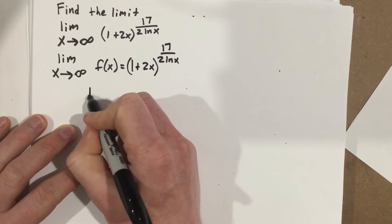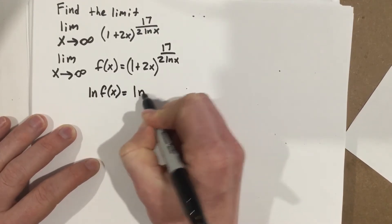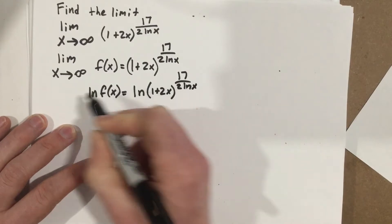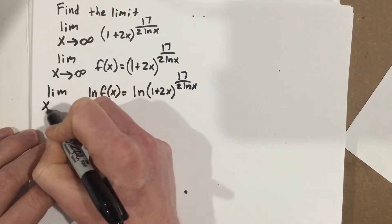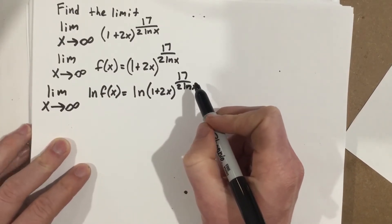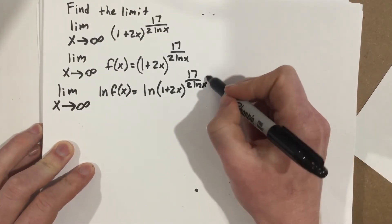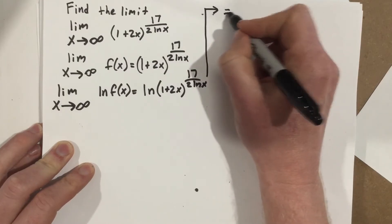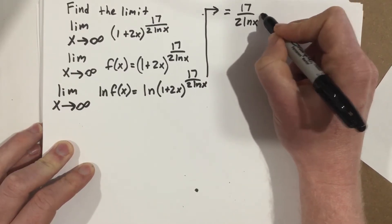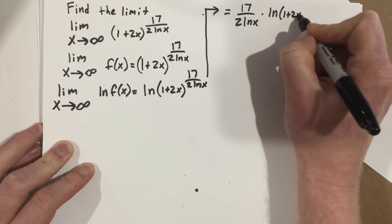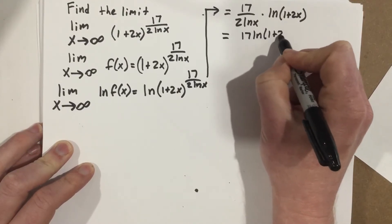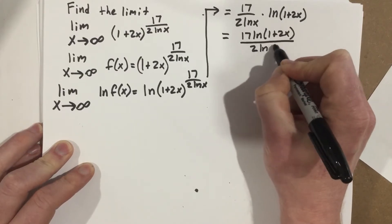I'm going to take the natural log of each side. When I take the natural log of each side, I can use the natural log laws to rewrite the right side by bringing the exponent to the front. So I rewrite this as 17 over two natural log x times natural log of one plus two x, which gives 17 natural log of one plus two x over two natural log x.